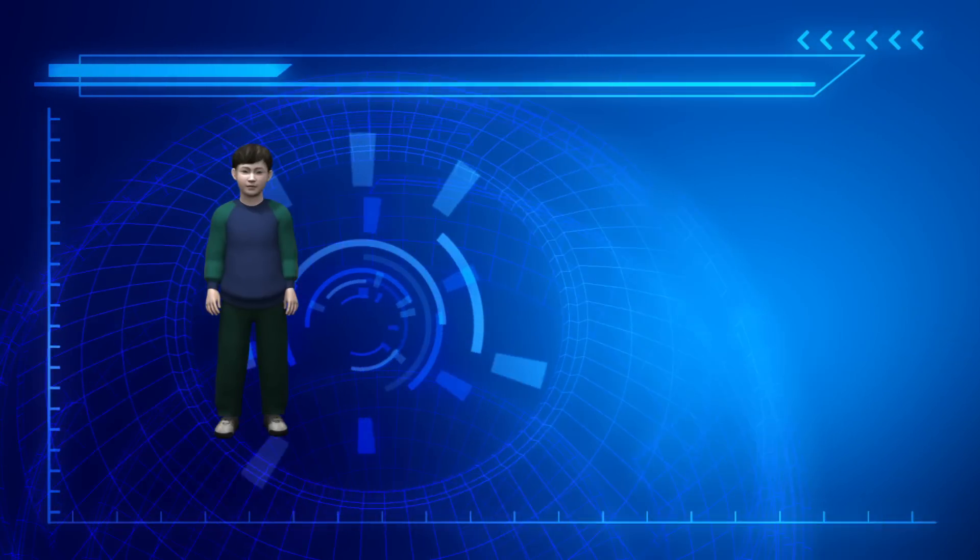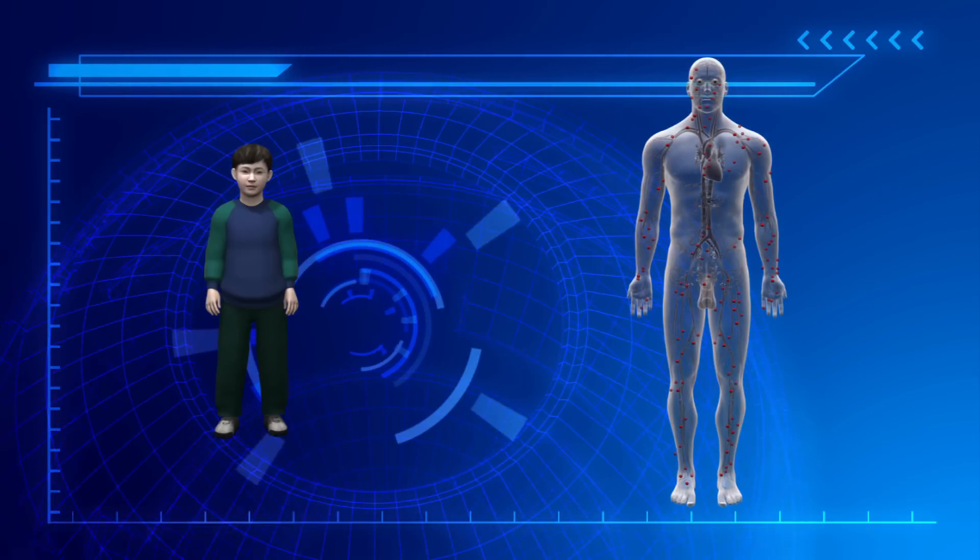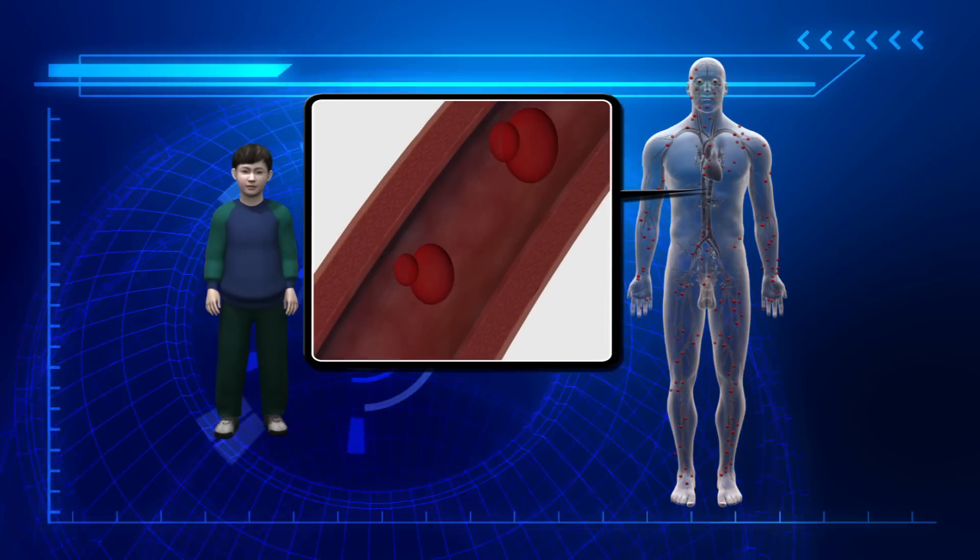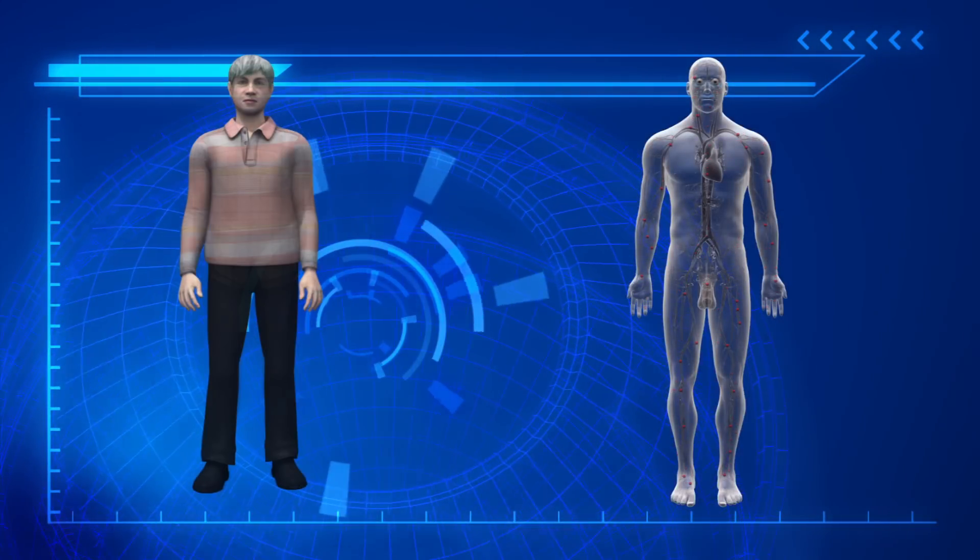Scientists have discovered that a protein, GDF11, which circulates in the bloodstream, can keep the brain and muscles young. The amount of GDF11 in the blood decreases as a person ages.